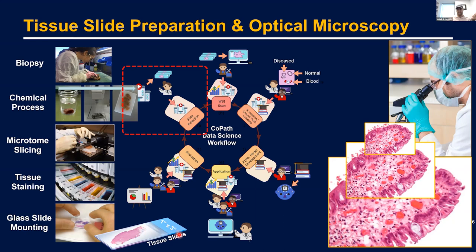Once the tissue gets stained, depending on the tissue structure, different areas absorb different levels of stain and start to contrast from each other, becoming visible under the microscope. The stained tissue is put on a glass slide with a cover slip — that's your tissue slide, usually one by three inches in size. The convention for more than 150 years has been to put these tissue slides under the microscope, where the pathologist studies the tissue at different magnification levels, zooming in and hovering over different positions to perform their diagnosis.